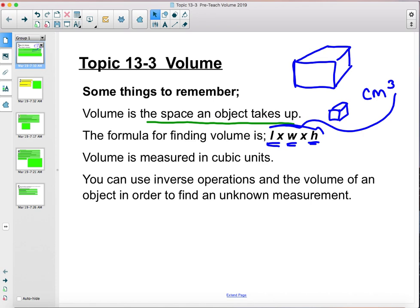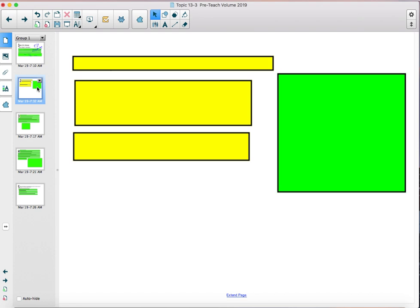You can use inverse operations and the volume of an object to find an unknown measurement. This is the big jump, having you use inverse operations, saying what's the volume, what's the missing measurement. That's a big 6th grade jump for us. That's where we really kick it into the next level for 6th grade.